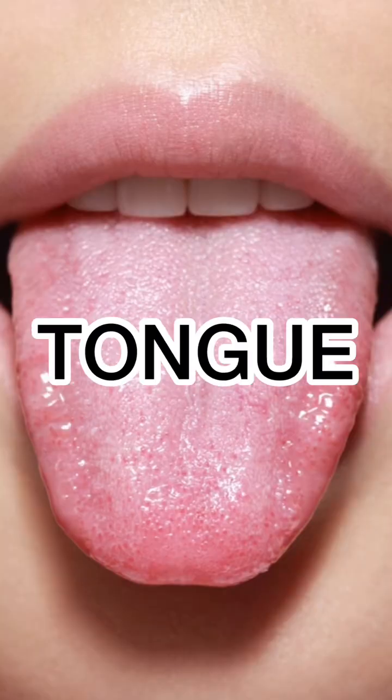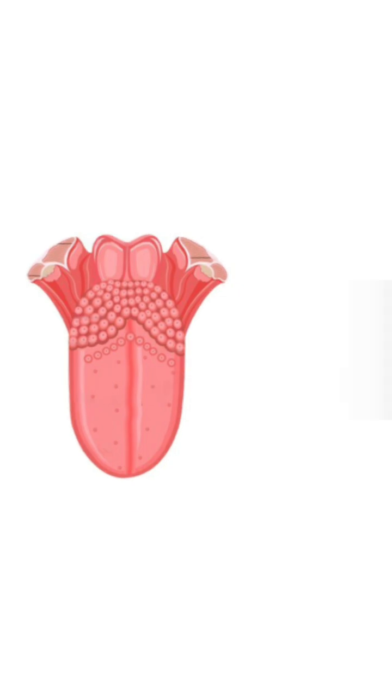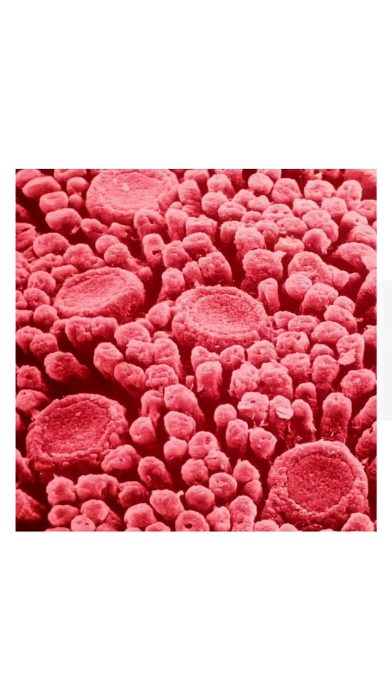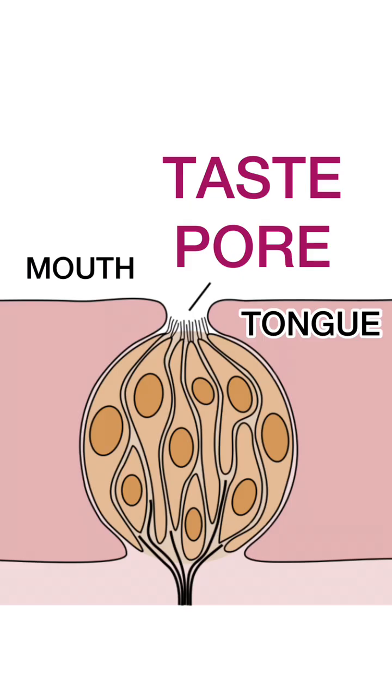This is your tongue. The tiny bumps on your tongue are not taste buds — they're actually called papillae. If you zoom in on the tongue, you'll see that there are thousands of small openings in the tongue tissue called taste pores.